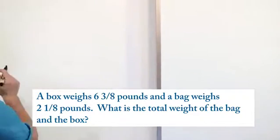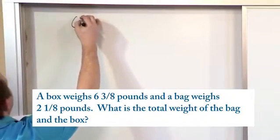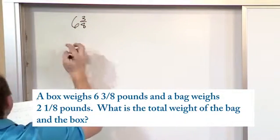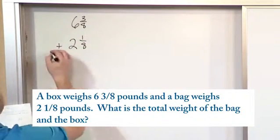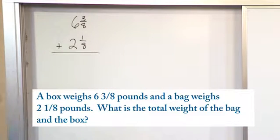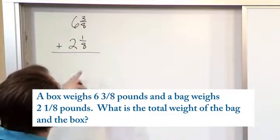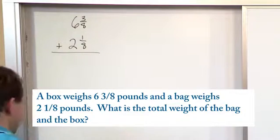So what we have is the box weighs six and three-eighths pounds, and the bag weighs two and one-eighths pounds. So we're adding these. Now remember there's two ways to add mixed numbers. We'll just use the easier way here.